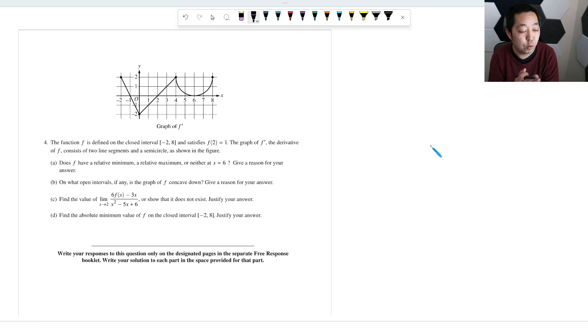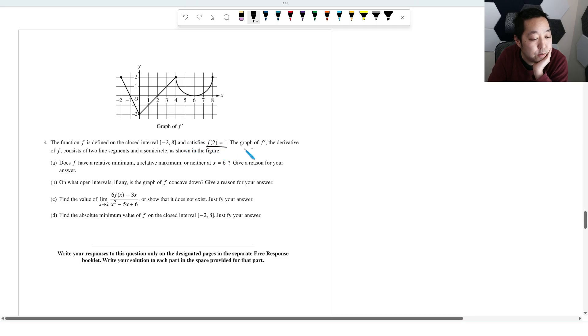Alright, let's take a look at the fourth FRQ. This is on the Calculus AB and BC exam, 2023. As usual, I do not have the solutions. They're not going to be released for a few months, so these will be my best guesses at the answers here. If I have any corrections, I will put it as a pinned comment in the video description. Function f is defined on this closed interval, satisfies this value, graph of f prime. The derivative f consists of two line segments and a semicircle, as shown.